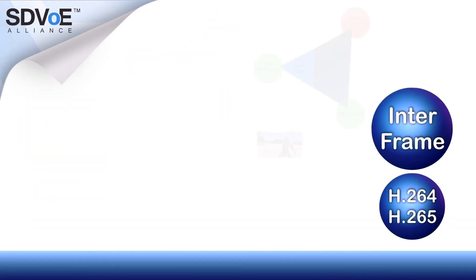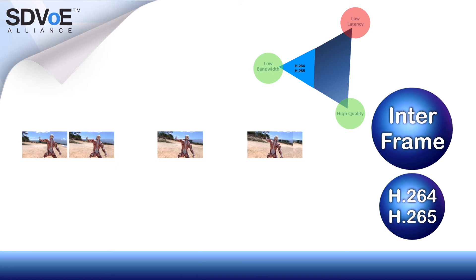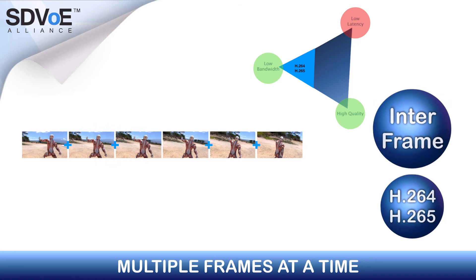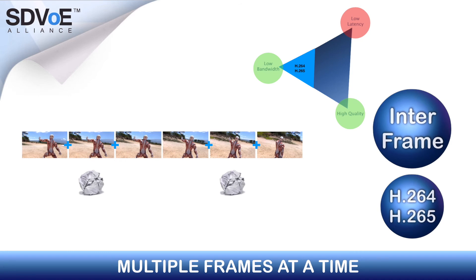An alternative is the interframe codec, which uses more complex algorithms to compress multiple frames at a time. This works well because often a frame of video is very similar to the frame before, so there's no need to resend the same data. Interframe codecs can use much less bandwidth by achieving extremely high compression rates while maintaining a reasonable quality. However, this is all done at the cost of significantly high latency.